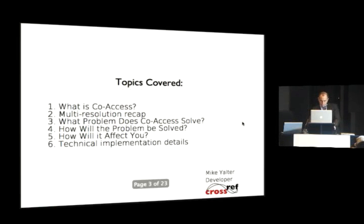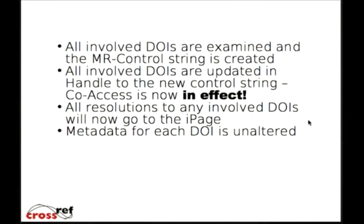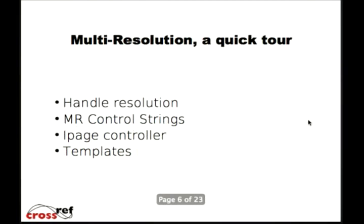This is the flow, or the way the co-access goes. So first, what's co-access? Essentially, it's the ability of multiple DOI owners — very much like what we saw with the multi-resolution, except in this case we're talking about the DOIs and not just the URLs — to be able to reference the same book content. The most important part is that it's mostly automated: once you've unlocked or made available what you want to allow for co-access, you'll allow the other party to send in their DOI with similar metadata to then generate the co-access situations.